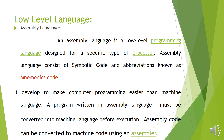A program written in assembly language must be converted into machine language before execution. Why must any program be converted into machine language? Because the computer system only understands one language, which is machine language, also called binary language. So any program written by a programmer in any language must be converted into machine language before execution.